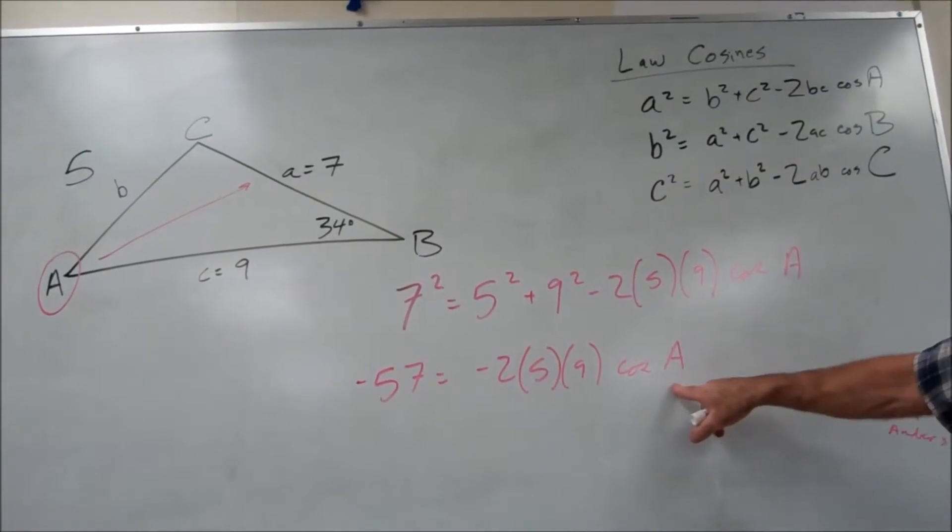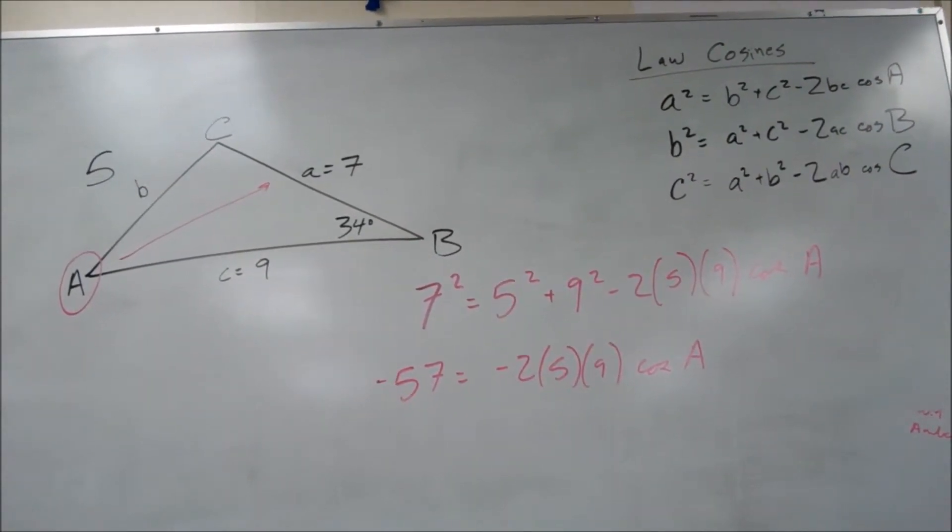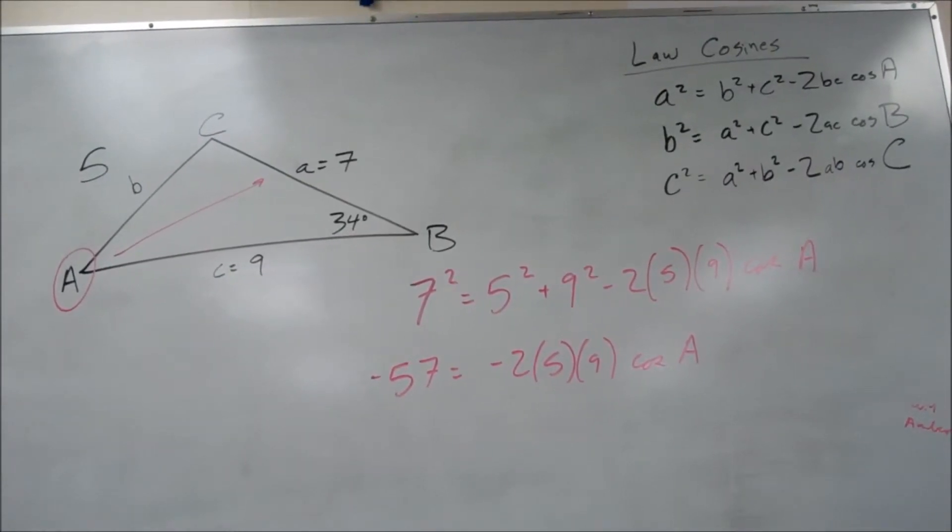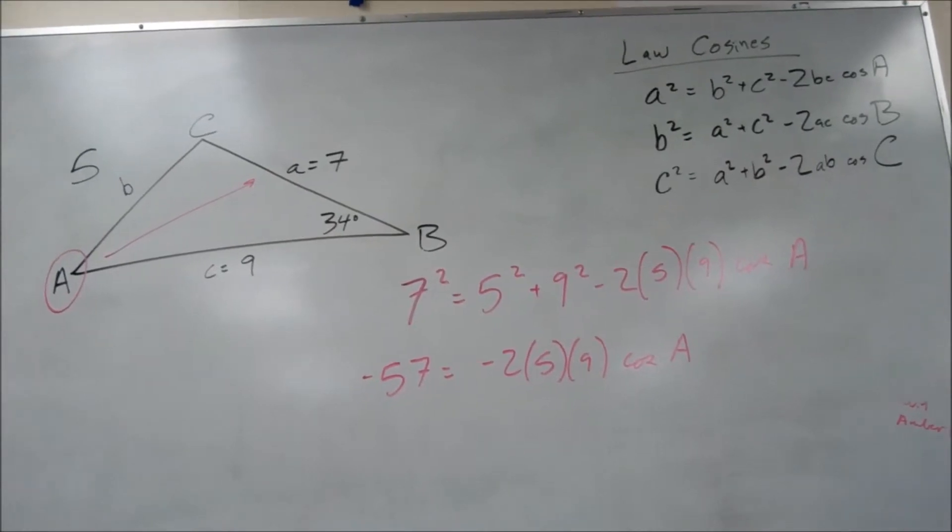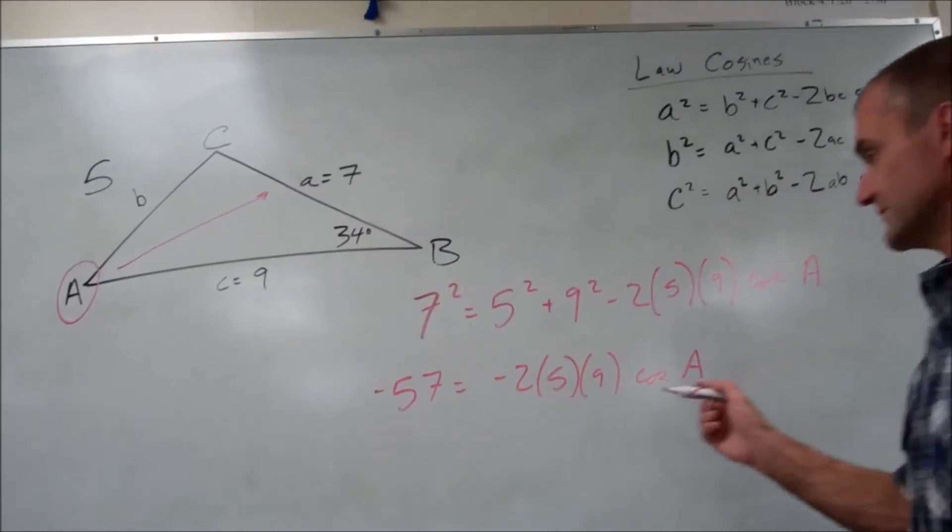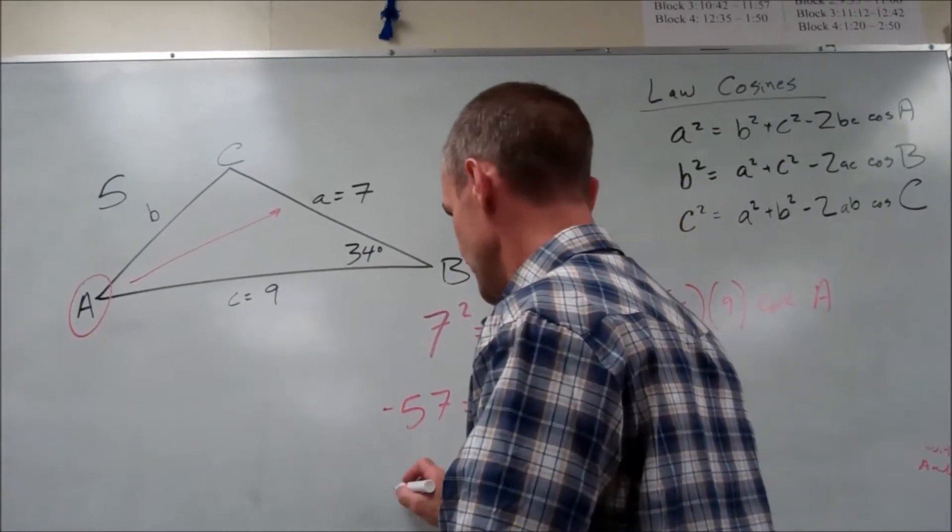Isolate my variable A and divide both sides by this number. So negative 57 divided by the quantity, negative 2 times 5 times 9. So cosine of A is equal to 0.63.